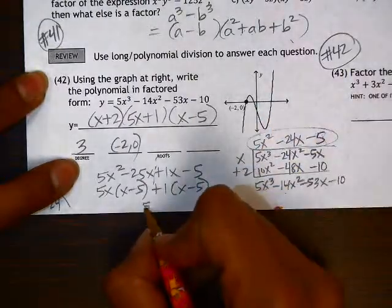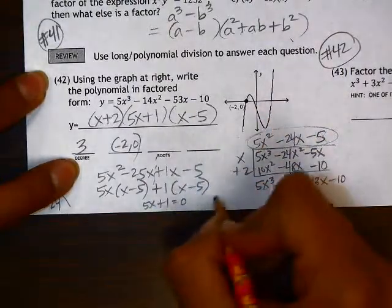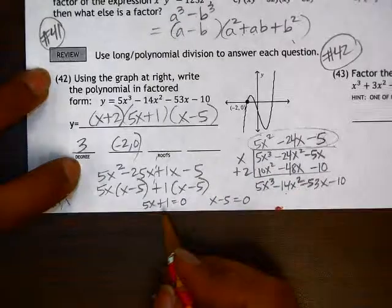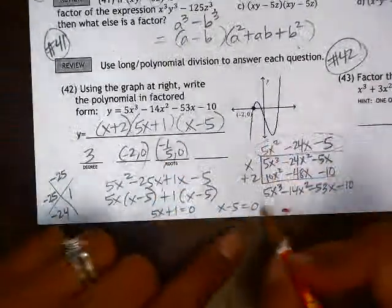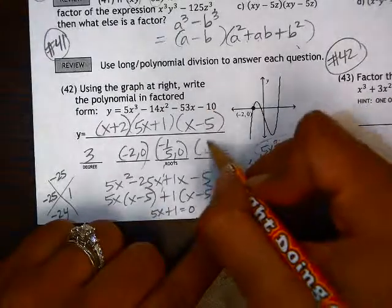So either 5x plus 1 equals 0 or x minus 5 equals 0. This would give us a root of negative 1 fifth. This equation would give us a root of positive 5.